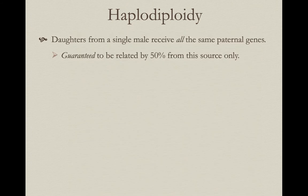Let's make a simplifying assumption: the queen mates one time. So all of the sperm she uses to produce daughters come from that single male, and all of those paternal genes are going to be the same. Just from the paternal contribution in these daughters, guaranteed sisters are going to be related to each other by 50%, just from the paternal aspect of their genes.